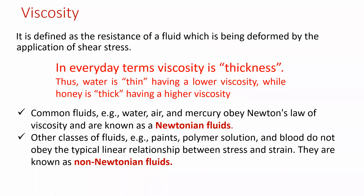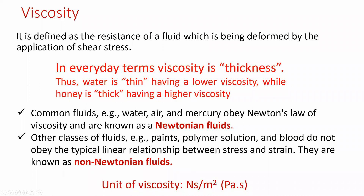Examples of non-Newtonian fluids include paint, polymer solutions, and blood — these do not obey a linear relationship between stress and strain. If you apply stress, the strain is not directly proportional — the fluid deforms in a different way. Such fluids, whether liquid or gaseous, are known as non-Newtonian fluids. The unit of viscosity is Newton·second per meter squared, or kg per meter per second.